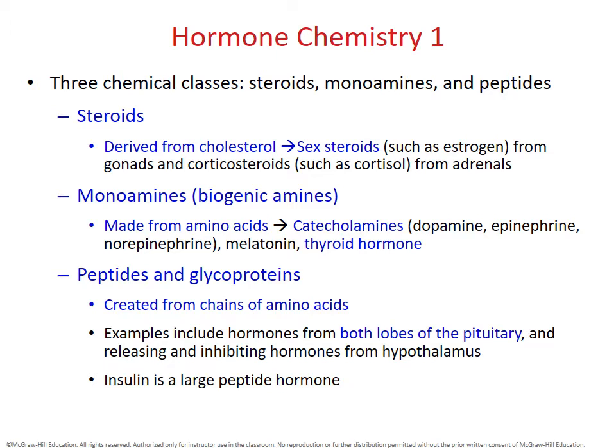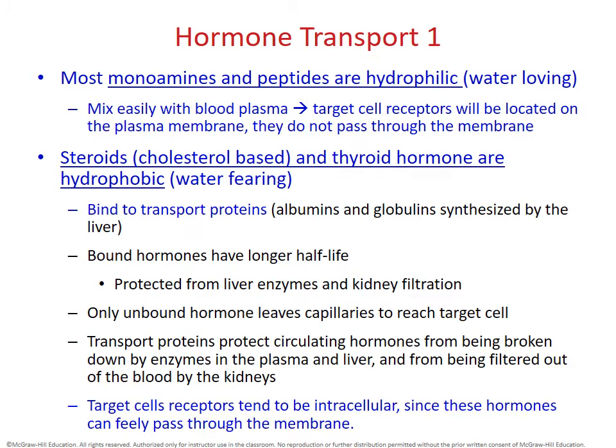The hormones that are steroids are derived from cholesterol, and examples would be sex steroids — estrogen and testosterone. Monoamines are made out of amino acids; examples include catecholamines such as epinephrine and dopamine, and thyroid hormone. Peptides are also made out of amino acids and include the hormones that come from your pituitary glands.